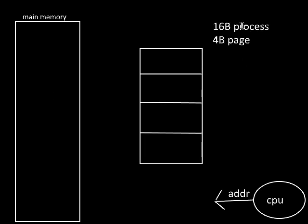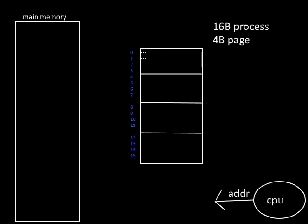Consider an example: a process of size 16 bytes, with each page being 4 bytes, and byte-addressable memory. From the CPU's point of view, the process is loaded at address space starting from 0. The first byte has address 0, next is 1, then 2, and so on — these are the logical addresses forming the logical address space. Each page is labeled: page 0, page 1, page 2, and page 3.